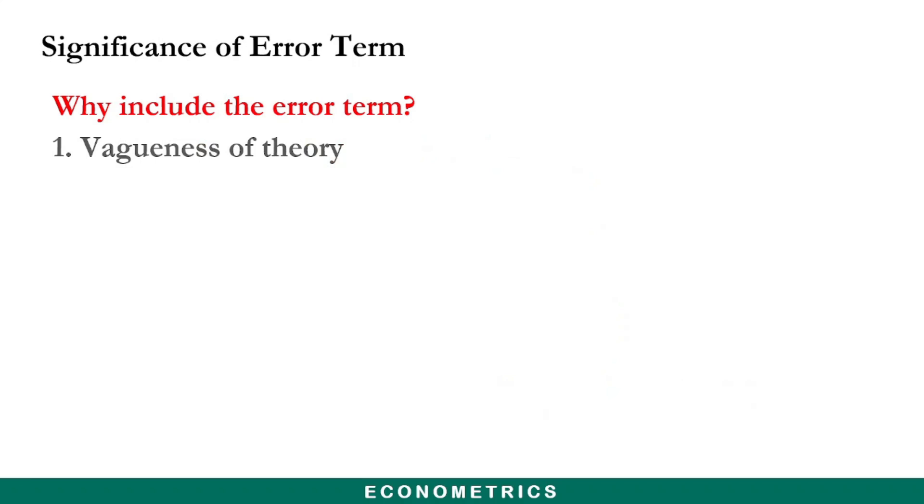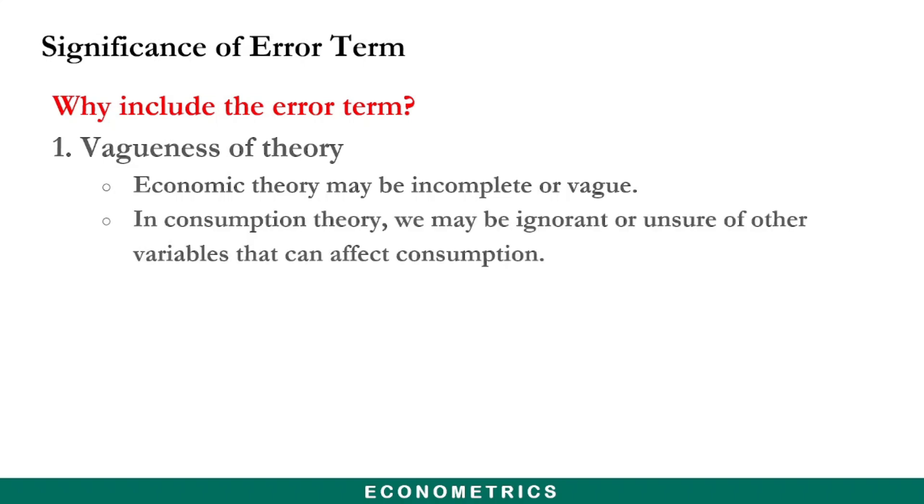So why do we have to include the error term in a regression model? The first reason is vagueness of theory. Normally, the theory determining the behavior of the dependent variable might be incomplete. For example, we know about the consumption theory where income affects consumption, but we might be ignorant or not sure of other factors that can affect consumption. So the parameter u is used as a substitute for any variable we might have omitted from this model.